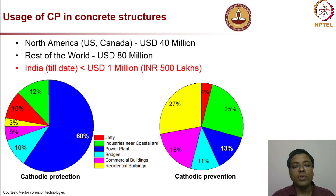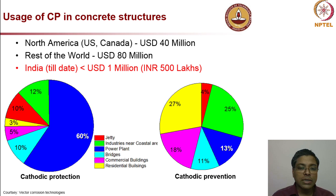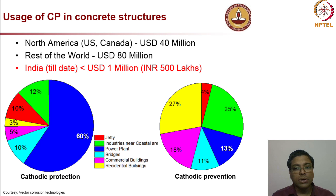Looking at CP usage in concrete structures, North America accounts for about 40 million US dollars and the rest of the world about 80 million US dollars. In India, the numbers show there is a lot more room to improve and penetrate the market. We have serious corrosion and repair-related issues, and it would be better to adopt cathodic protection to extend the life of repairs.